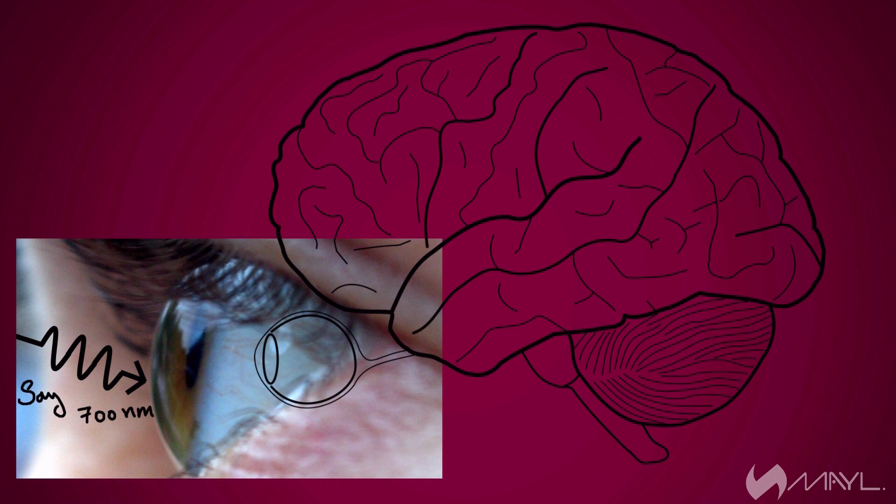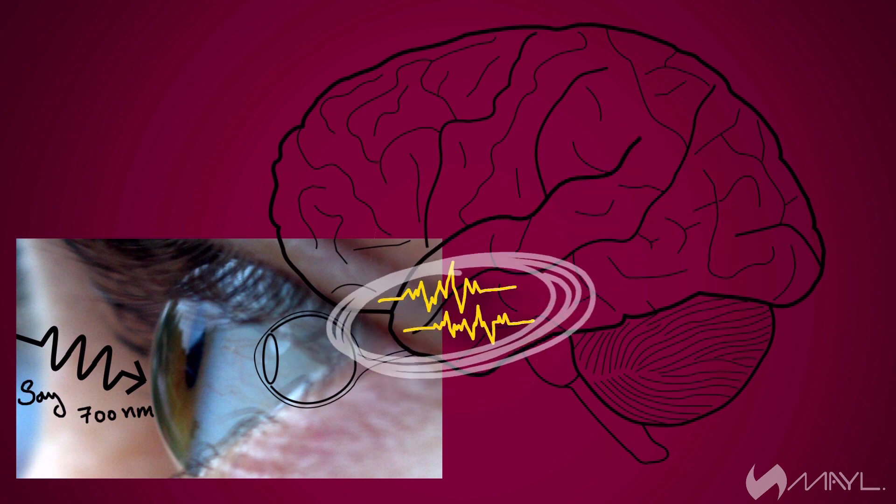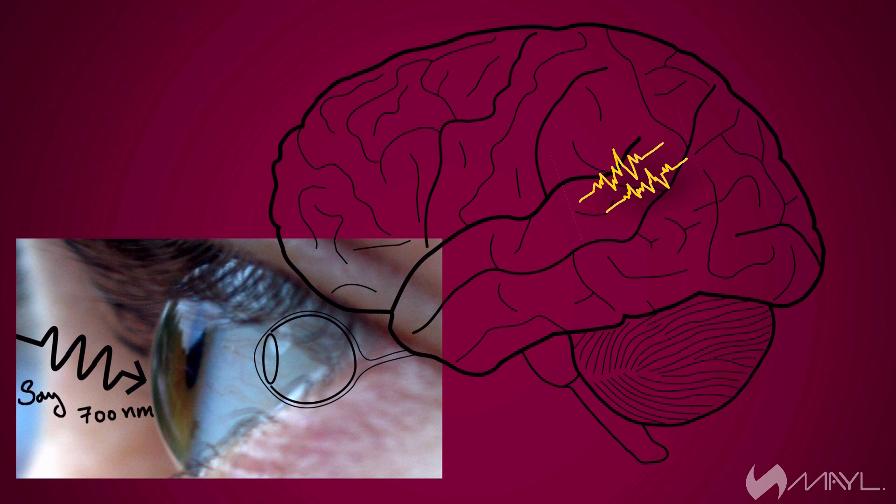But what's interesting here is that there is no way to prove that the impact or the sensation that occurred in the cones of our eyes when we saw a color, which sent an appropriate impulse to our brain, is the same for every person.